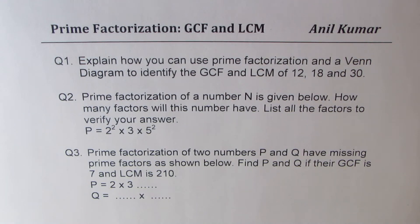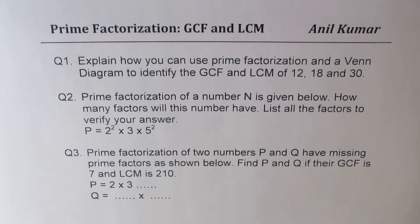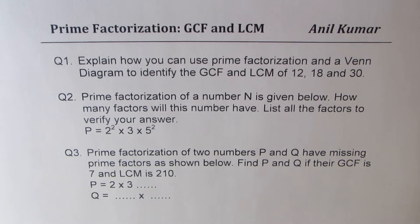I'm Anil Kumar sharing with you three very important questions based on prime factorization. Question number one: explain how you can use prime factorization and a Venn diagram to identify the greatest common factor and lowest common multiple of 12, 18, and 30.